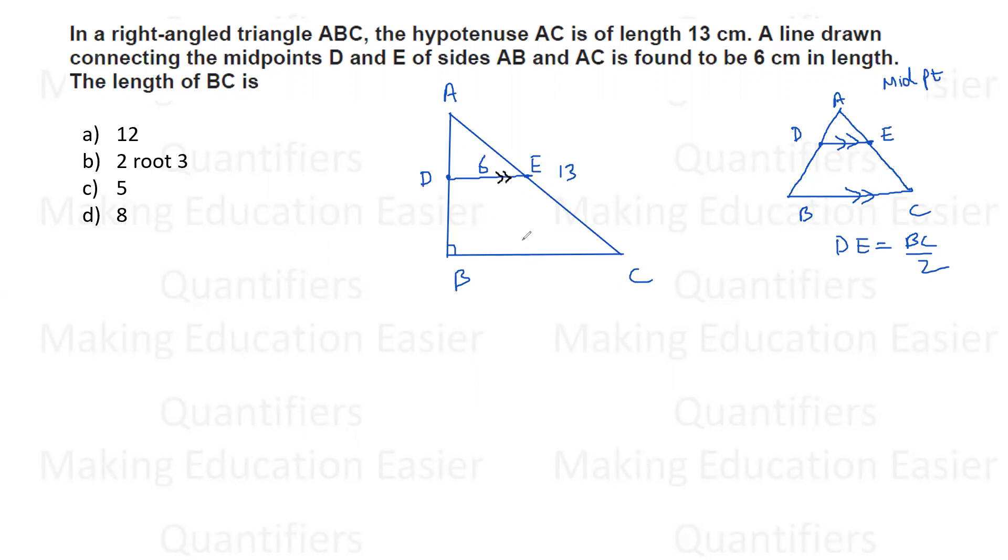That means DE and BC third, both will be parallel. And DE will be half of BC. So BC will be how much? Double of 6. 12 will be the answer. Option number one.